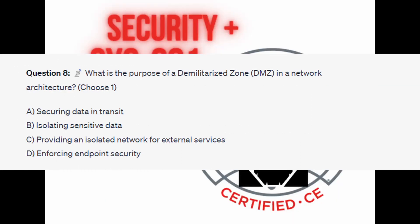Question number eight: what is the purpose of a demilitarized zone or DMZ in a network architecture? Choose one. Is it A, securing data in transit? Is it B, isolating sensitive data? Is it C, providing an isolated network for external services? Or is it D, enforcing endpoint security?